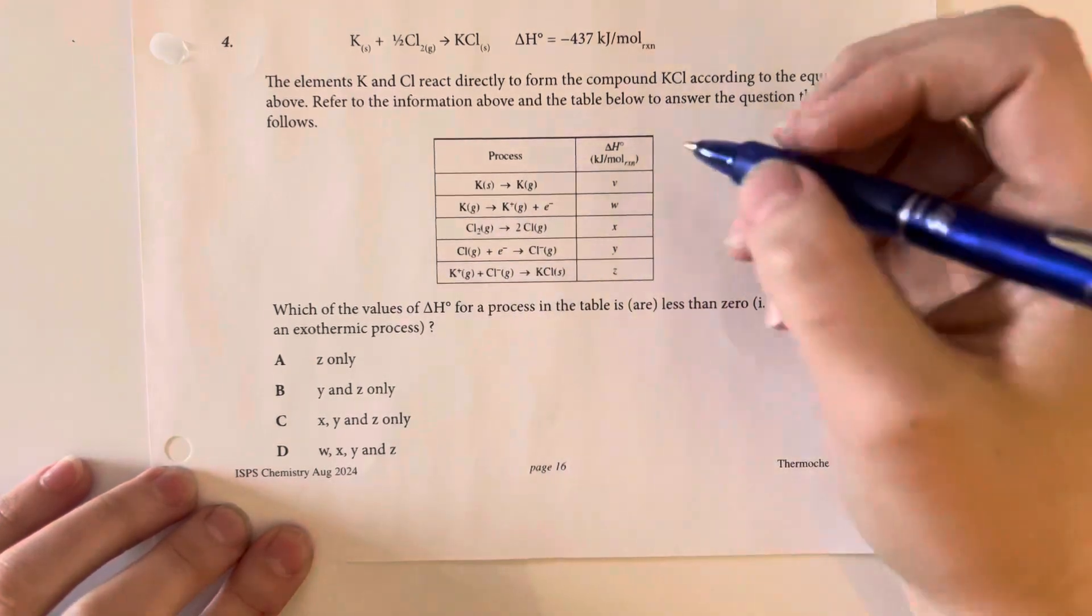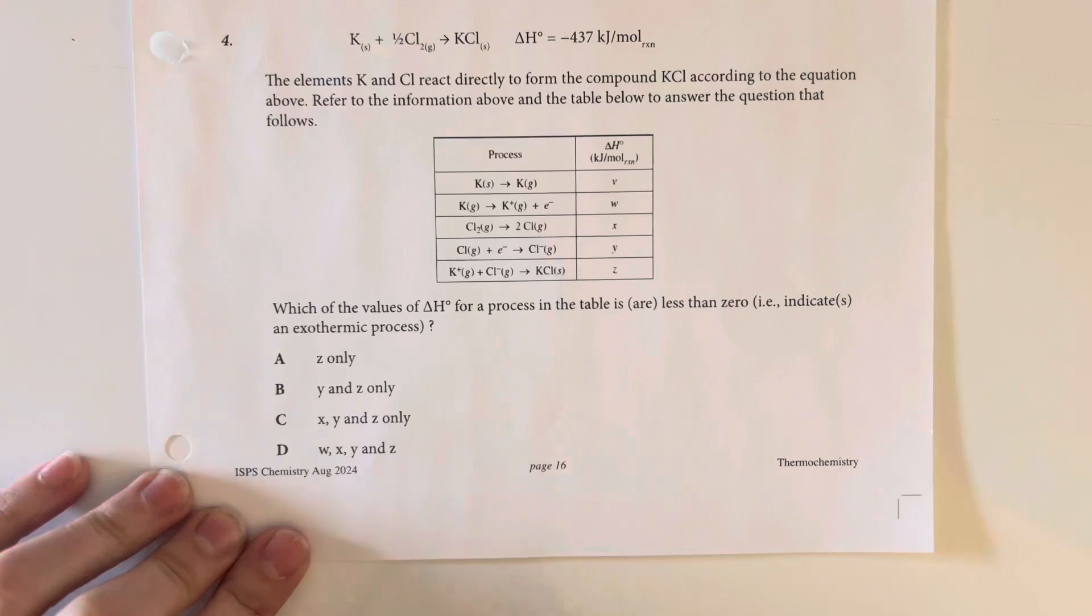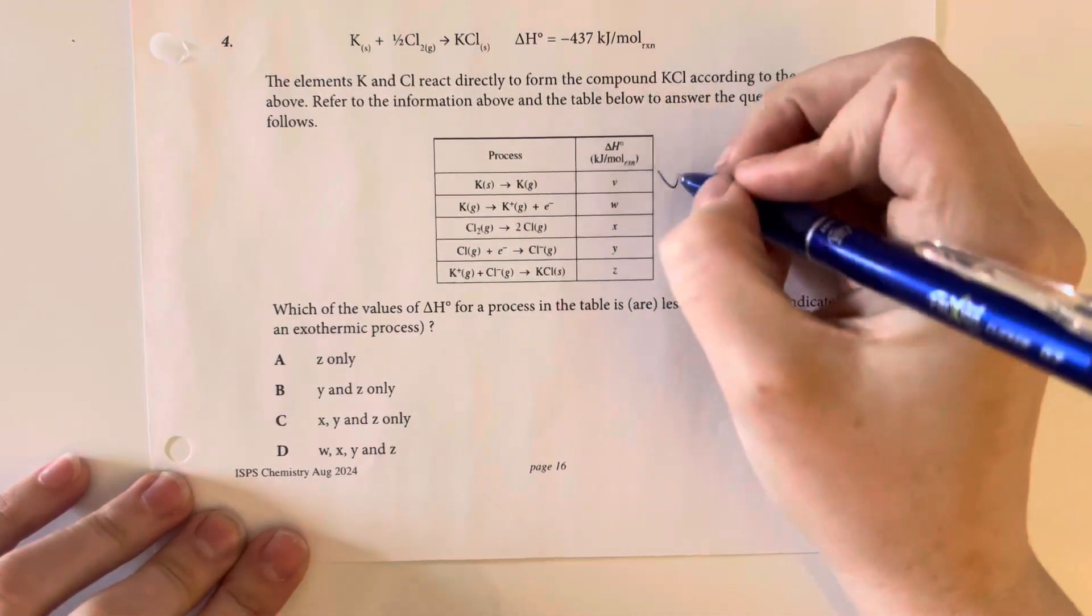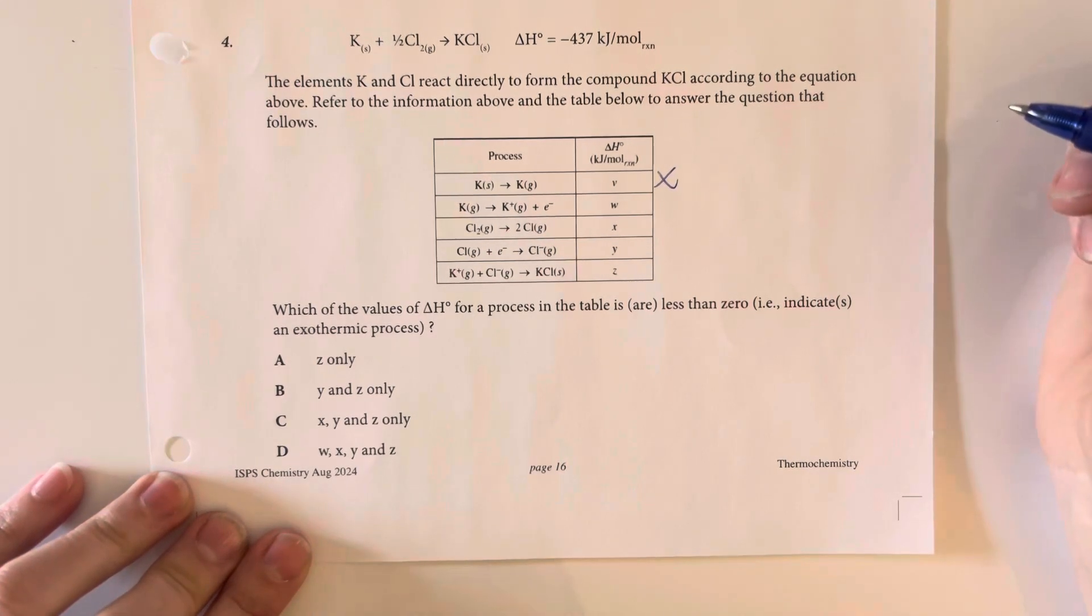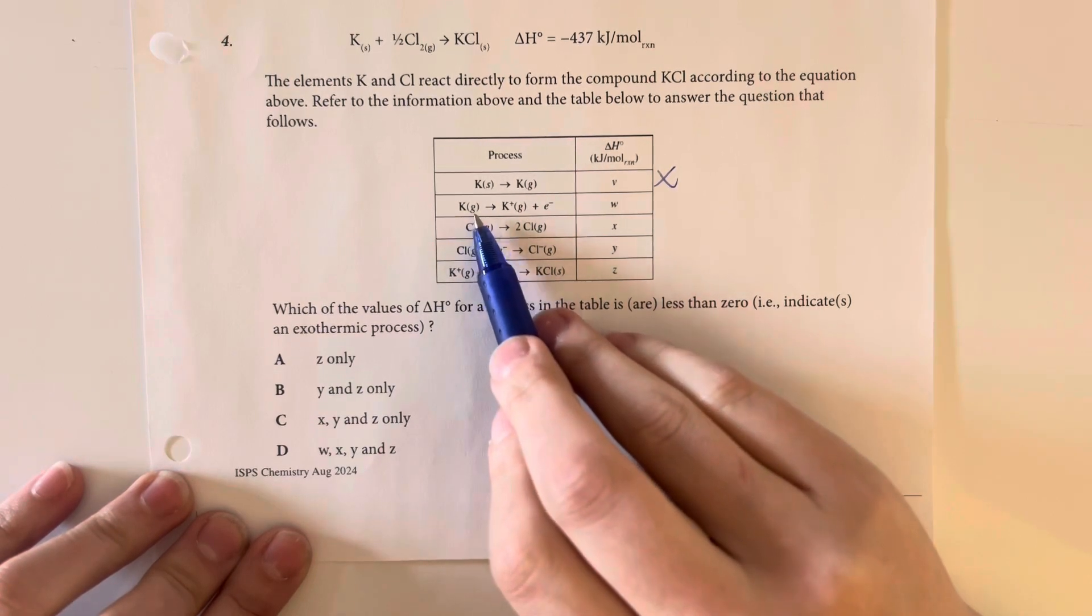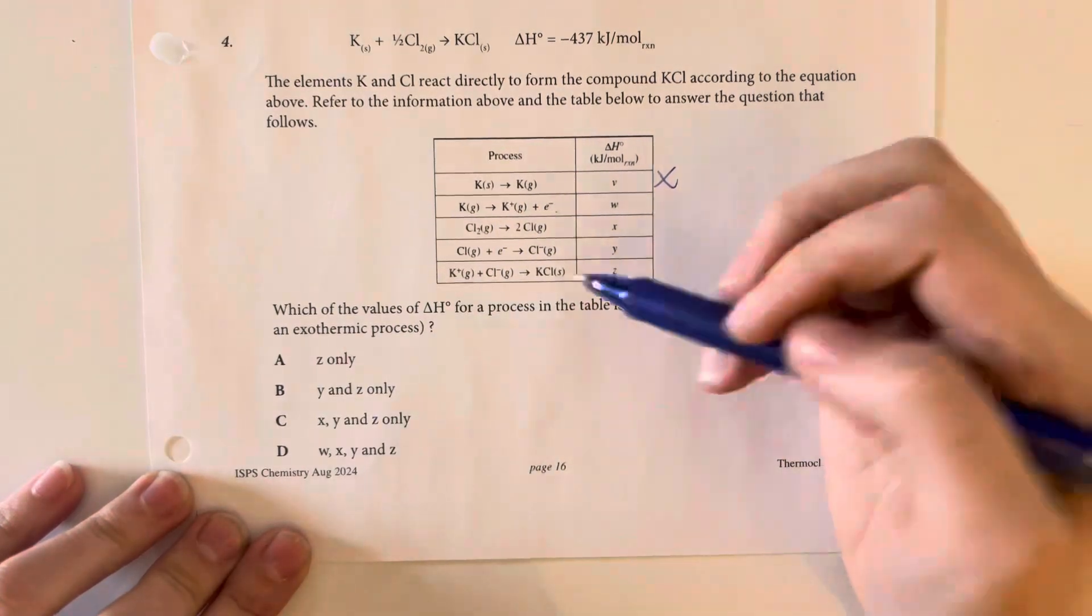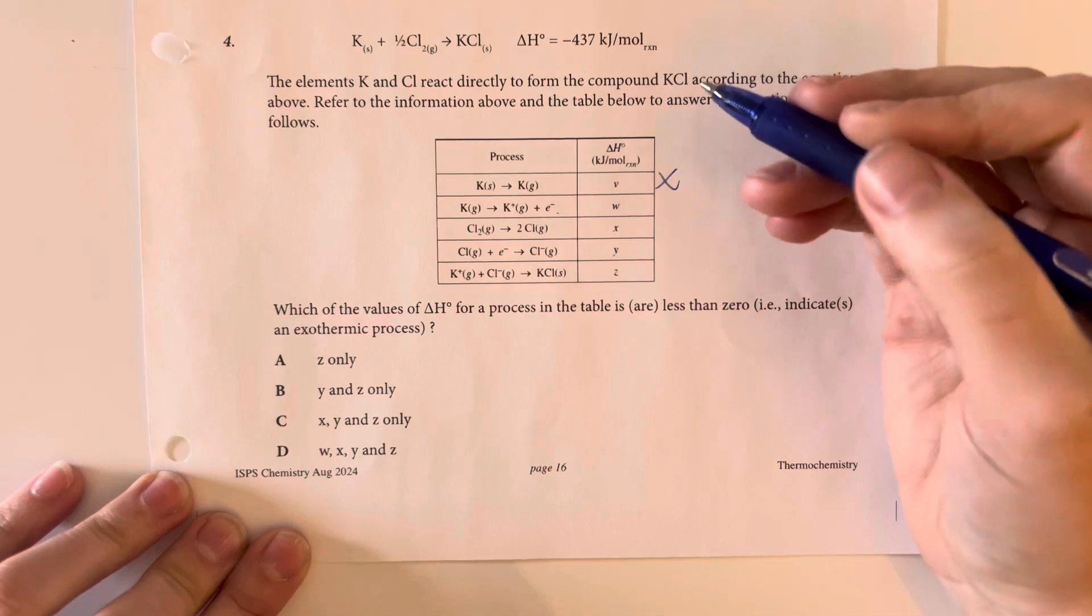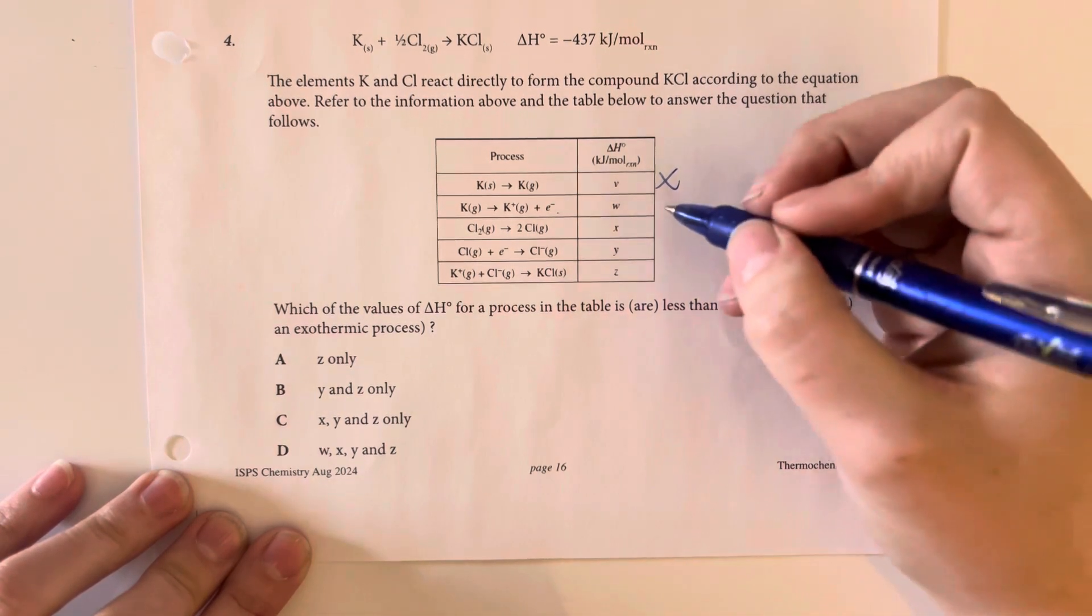Going from solid to gas, that requires an intake of energy because the gaseous particles have more energy. So, no, definitely not V. Here we have the gaseous potassium releasing an electron and becoming its own ion. You are going to have to put in some energy in order to steal that electron. So, no.